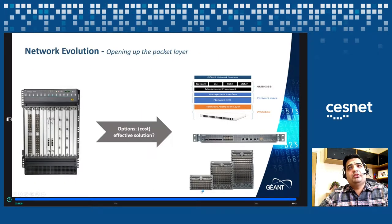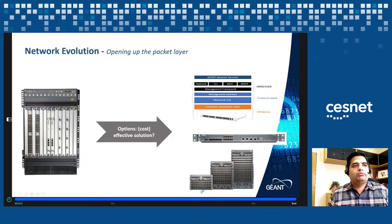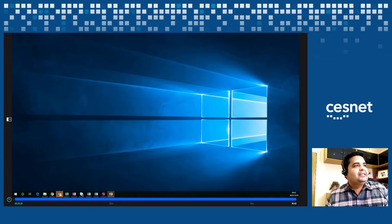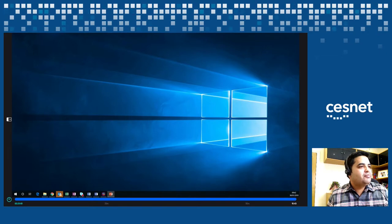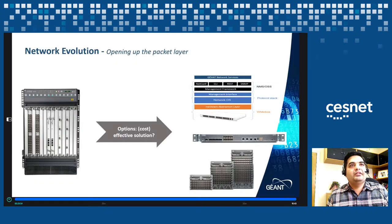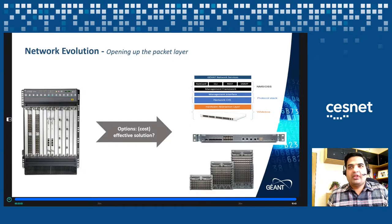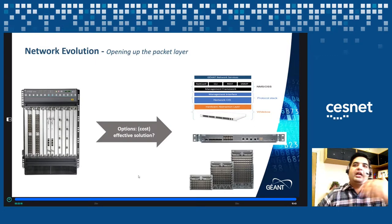Moving on to the packet layer — sorry, PowerPoint just decided to restart. Let me quickly resume. Moving from the transport layer onto the packet layer: we currently have the packet layer based on the Juniper MX platform, and the management system is also provided by Juniper Junos Space. We wanted to find a cost-effective solution to replace the existing equipment.